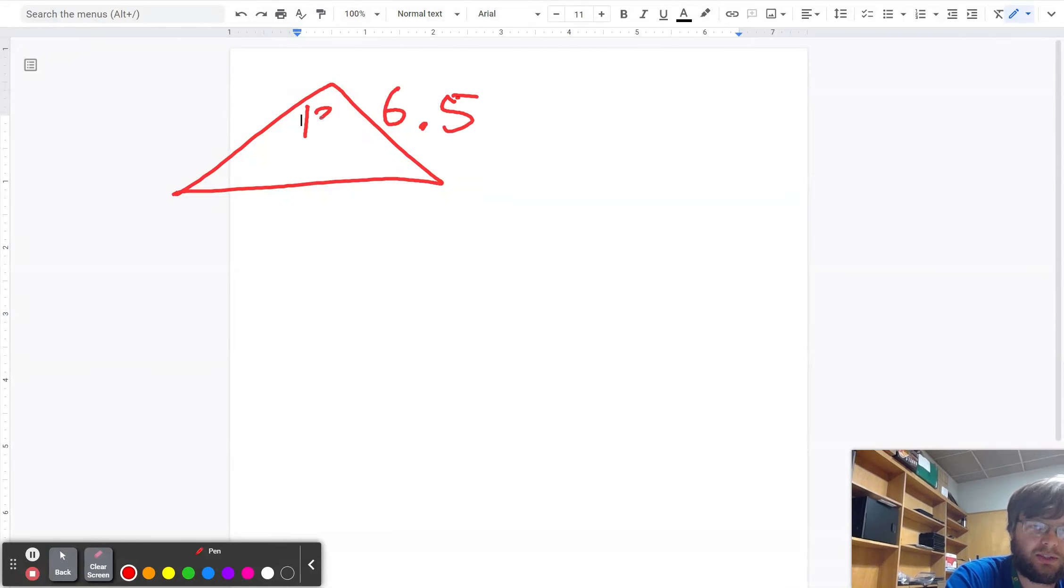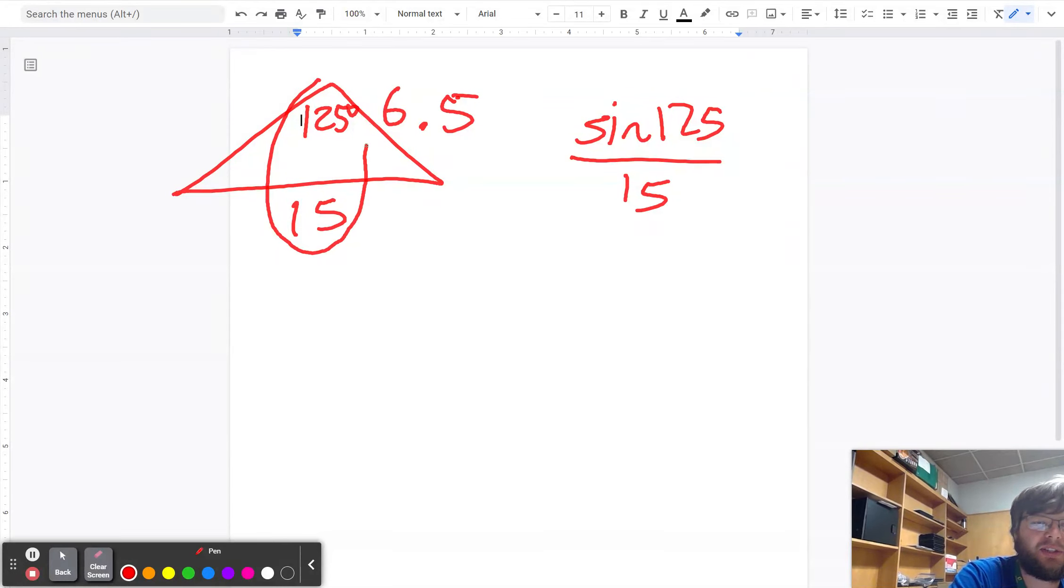let's say this is 6.5. This is, excuse me, 125 degrees. And then this is 15 over here. What I can say is that the sine of 125 over 15, and I know those are linked up because they're on opposite sides of the triangle, has to be equal to,